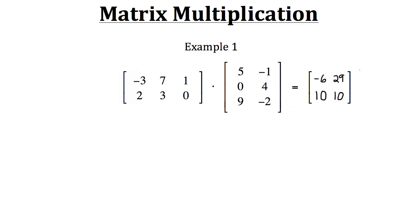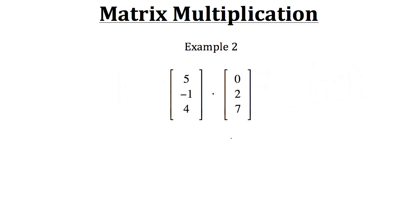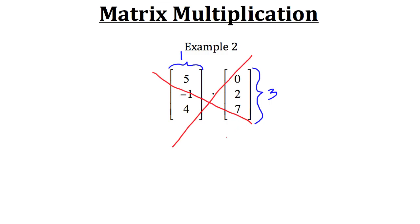So when we multiply these two matrices together we get a resulting matrix that looks like this. Now let's take a look at one more example. With example 2 we have two different matrices we want to multiply together. Before we can do that, we need to check that the dimensions are correct — the number of columns in our first matrix must equal the number of rows in our second matrix. In this case we have three rows, but the column count doesn't match, so we can't multiply the two matrices together. Matrix multiplication would not be possible for this example.